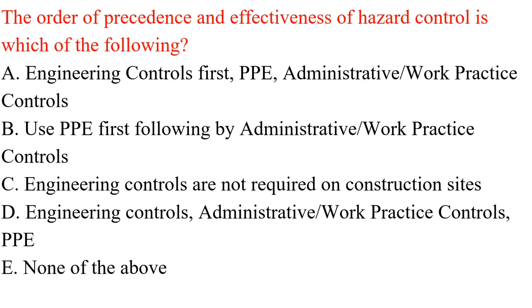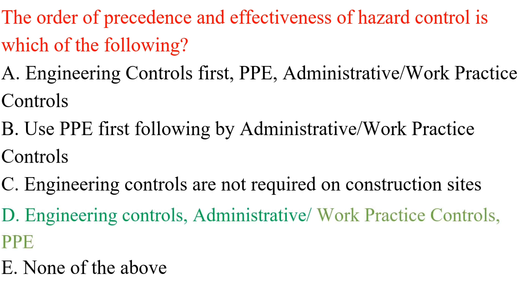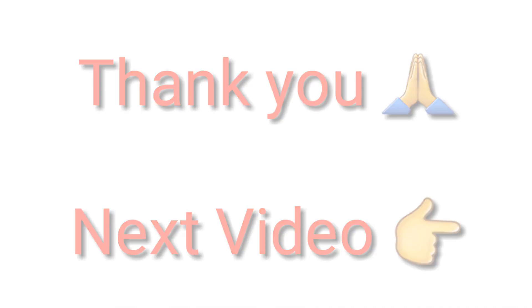Question. The order of precedence and effectiveness of hazard control is which of the following? A. Engineering controls first, PPE, administrative, work practice controls. B. Use PPE first, followed by administrative, work practice controls. C. Engineering controls are not required on construction sites. D. Engineering controls, administrative, work practice controls, PPE. E. None of the above. Answer: D. Engineering controls, administrative, work practice controls, PPE. Thank you.